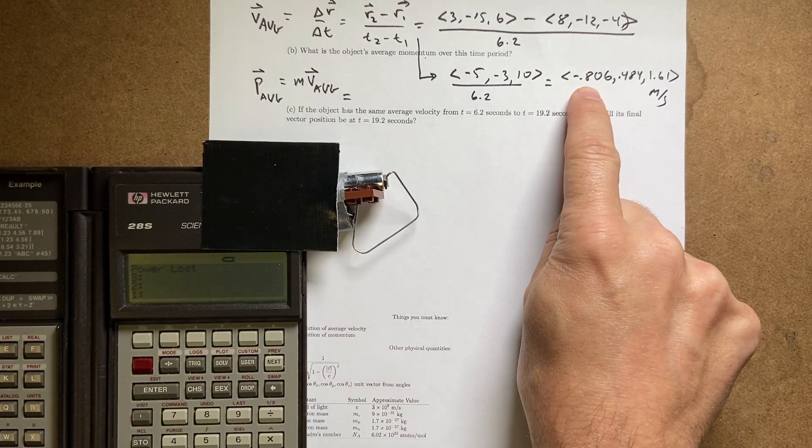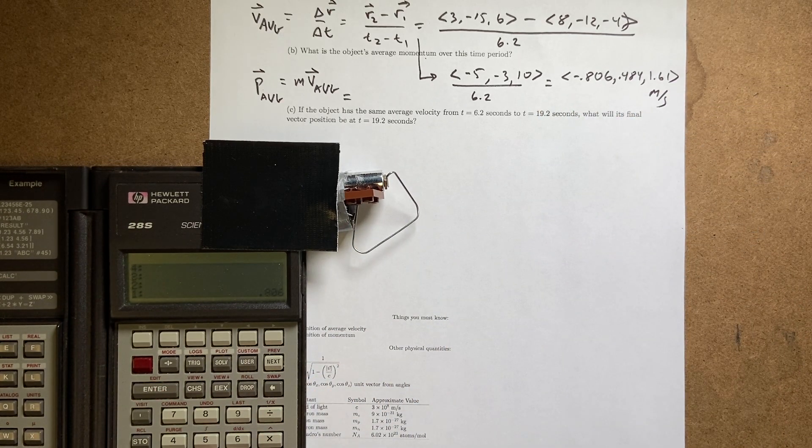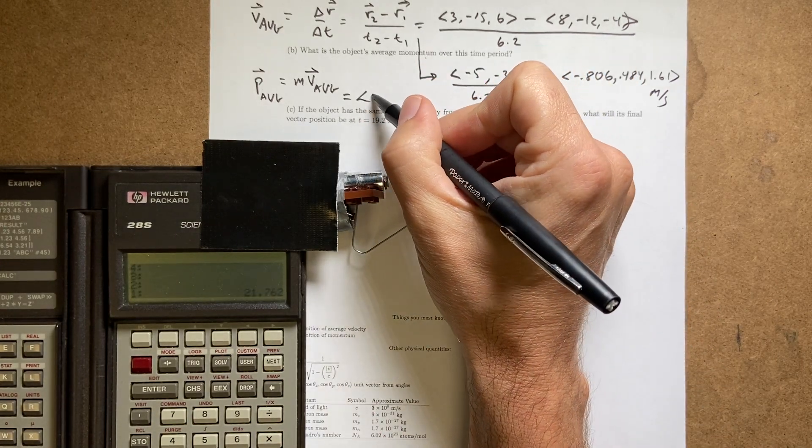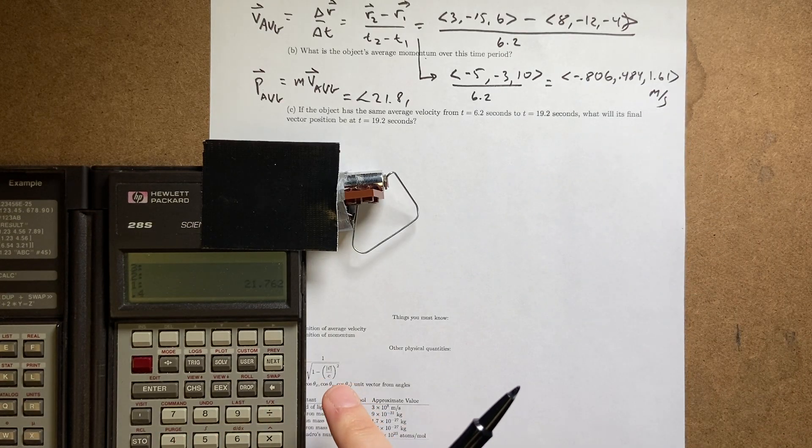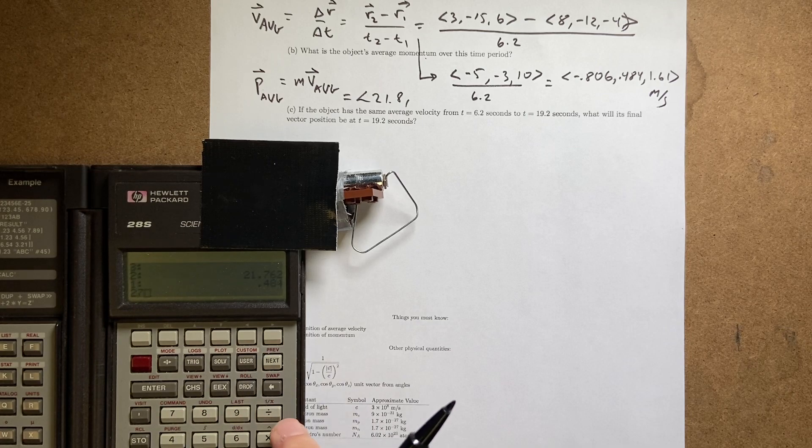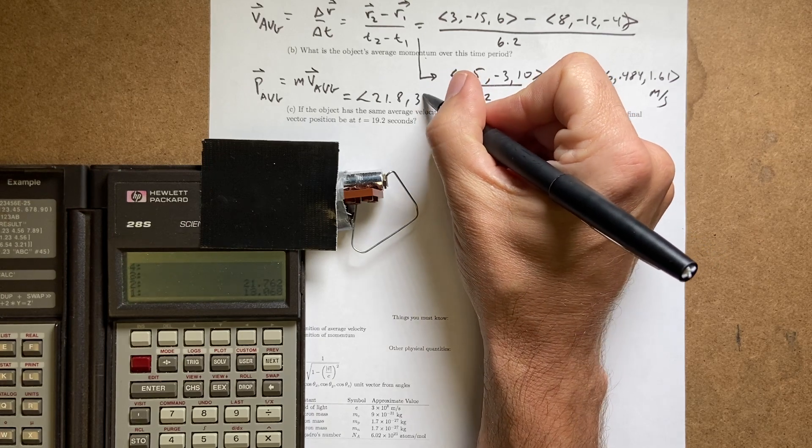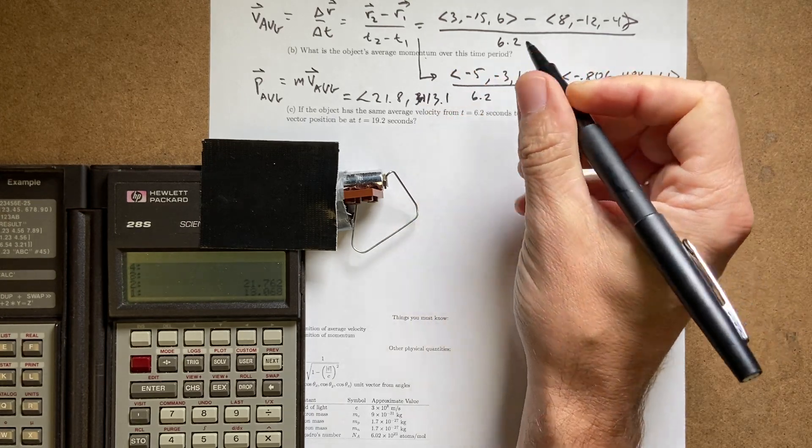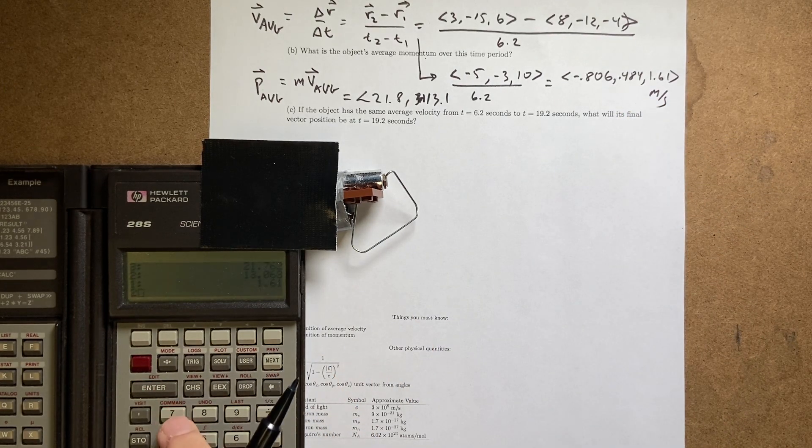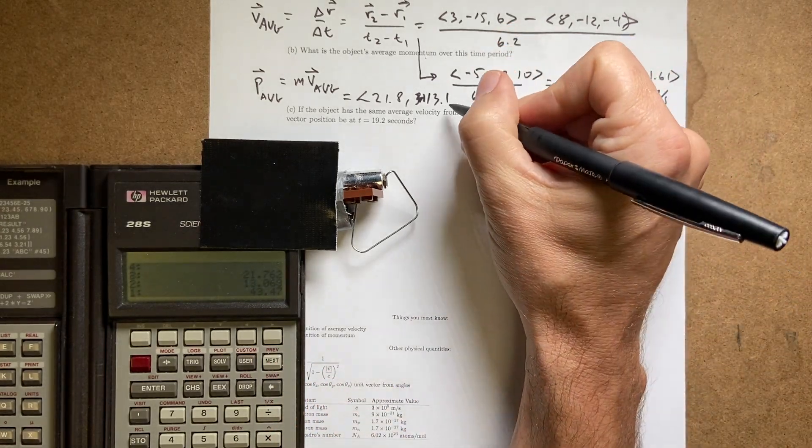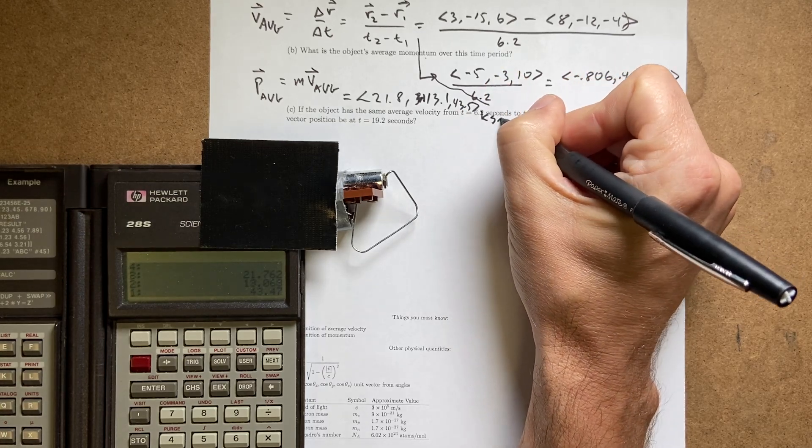So I'm just going to multiply each of these by 27. And that will give me my momentum. So I have 0.806 enter 27 times, so I get 21.8. And I have 0.484 enter 27 times, 13.07. And then finally, I have 1.61 times 27, which is 43.5. And that's going to be kilogram meters per second.